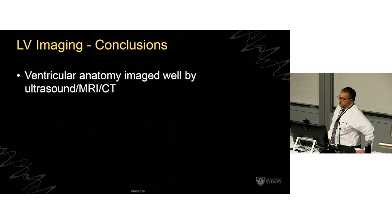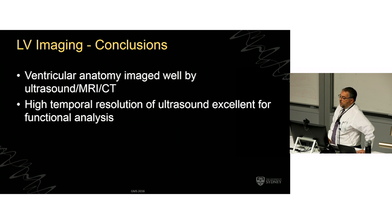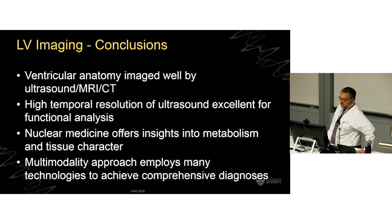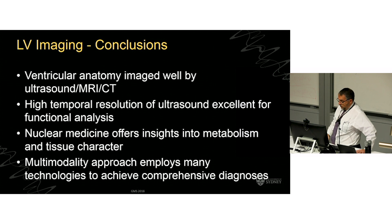To summarise: ventricular anatomy is imaged very well by all technologies — ultrasound, MRI, and CT. Echo is particularly good because it has a high frame rate and excellent temporal resolution. Nuclear medicine offers insights into metabolism and tissue characterization. In this day and age, we should all be able to read these multimodality approaches so we can get a comprehensive diagnosis. Thanks very much.